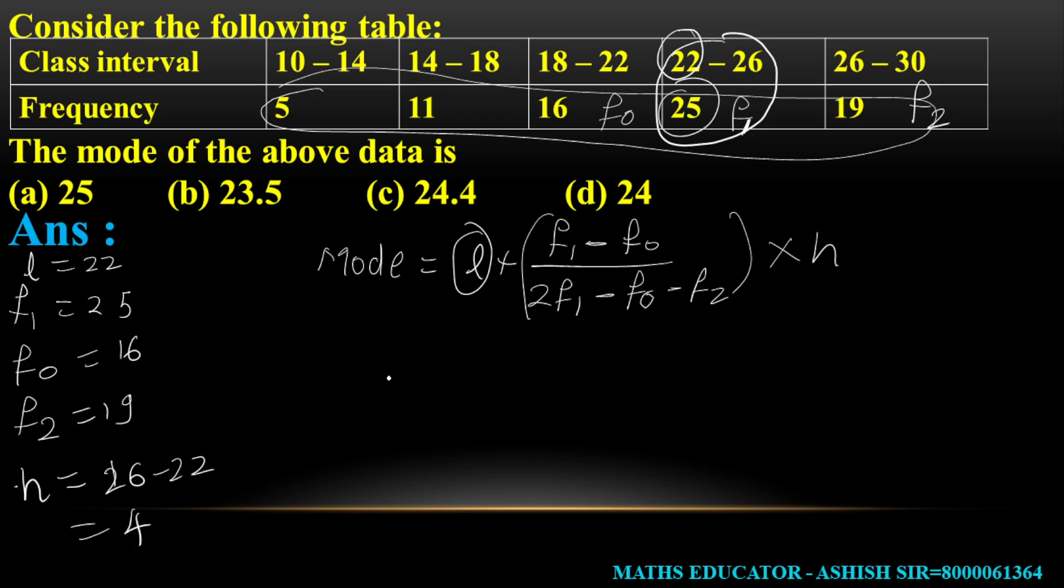Now substituting the values: L is 22, plus F1 is 25, F0 is 16, upon 2 times 25 minus 16 minus 19, into H which is 4.